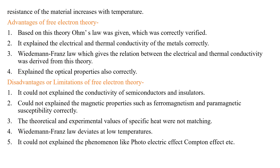This theory correctly explained the electrical and thermal conductivity of metals, and also the optical properties of metals. It gave a very important relation between electrical and thermal conductivity — the Wiedemann-Franz law. The limitations: it was not able to explain the conductivity of semiconductors and insulators, could not explain magnetic properties such as ferromagnetism and paramagnetic susceptibility, and specific heat values did not match theoretical predictions. The Wiedemann-Franz law deviated at low temperatures, and this theory could not explain the photoelectric effect.